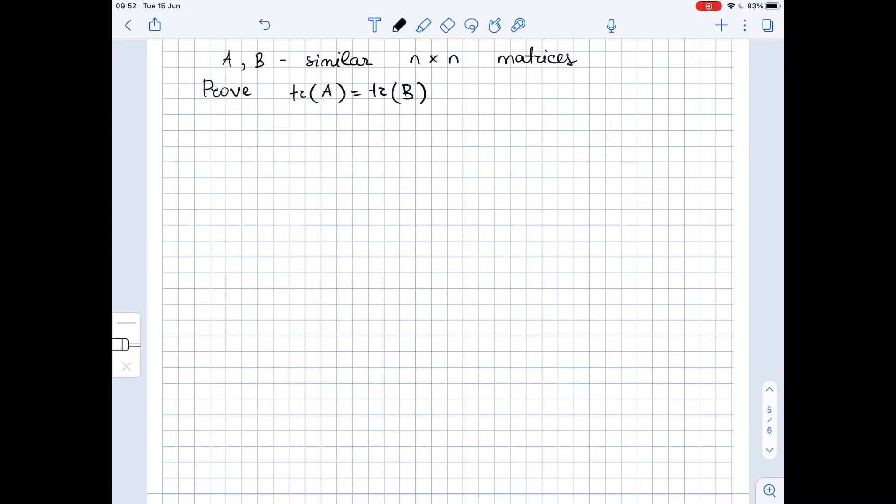First of all, given that A and B are similar n by n matrices, it means that there exists a non-singular n by n matrix P such that B equals P inverse times A times P and A equals P times B times P inverse, and P is n by n non-singular.